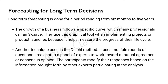Let us start with forecasting for long-term decisions. Long-term forecasting is generally done for a period ranging from six months to five years. Generally, when we say long-term, we mean more than a year — some define it as more than three years, three to five years, or even ten years. That is long-term decisions.